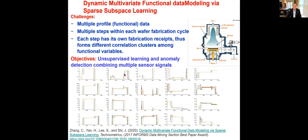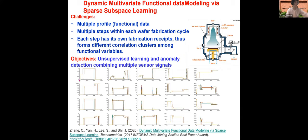Identifying which sensors belong to the same cluster is challenging because the functional curves have time-varying step durations — the boundary between process steps shifts depending on the specific wafer and feedback control actions. Without knowing when each step starts and ends, we cannot group sensors for multivariate monitoring. This problem of simultaneous automatic segmentation and automatic clustering of functional data was investigated by major semiconductor companies without resolution, which led them to approach us for a data fusion solution.